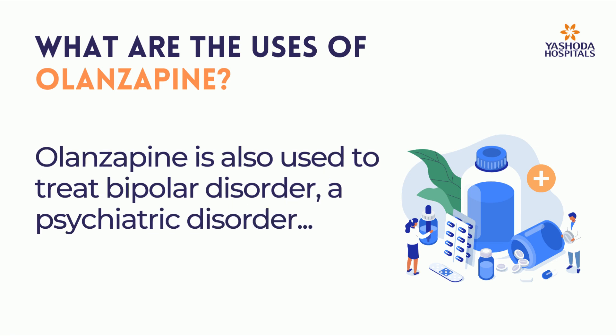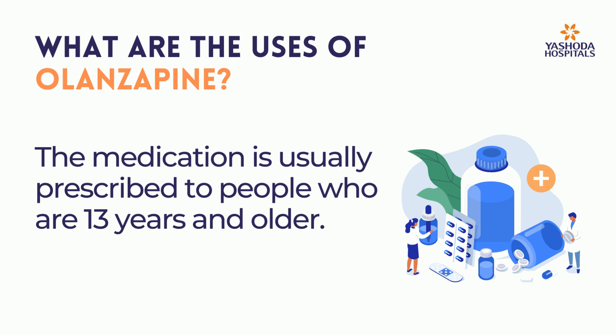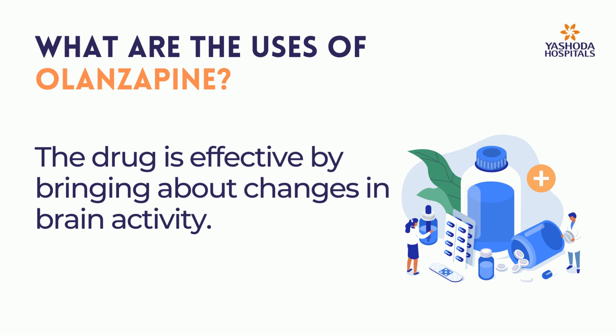Olanzapine is also used to treat bipolar disorder, a psychiatric disorder characterized by prolonged periods of alternating mania and depression. The medication is usually prescribed to people who are 13 years and older. The drug is effective by bringing about changes in brain activity.